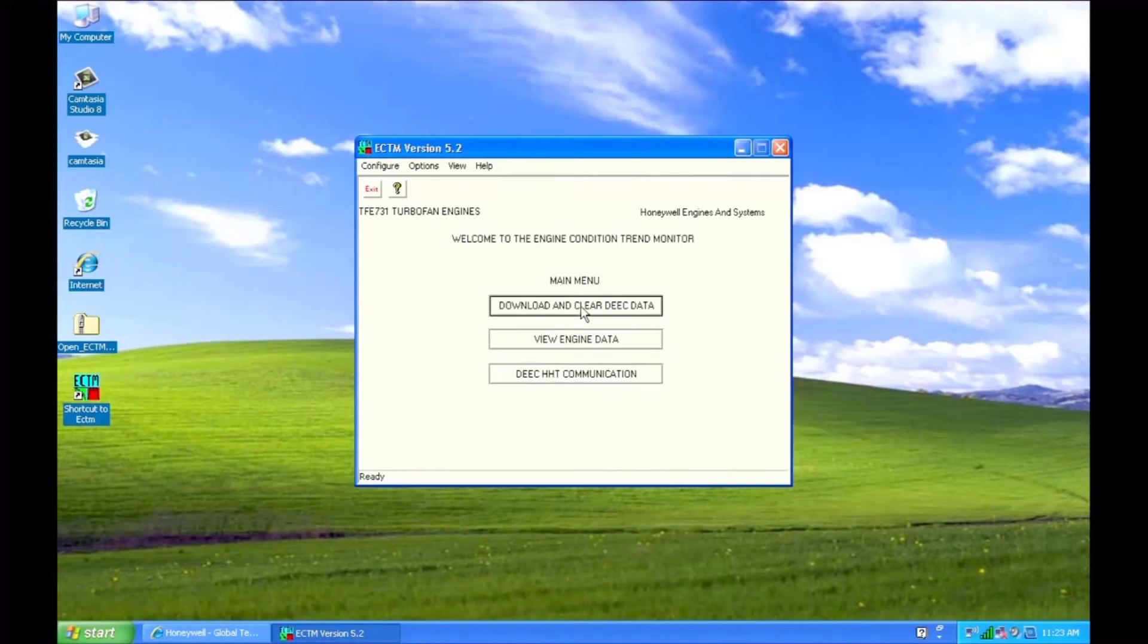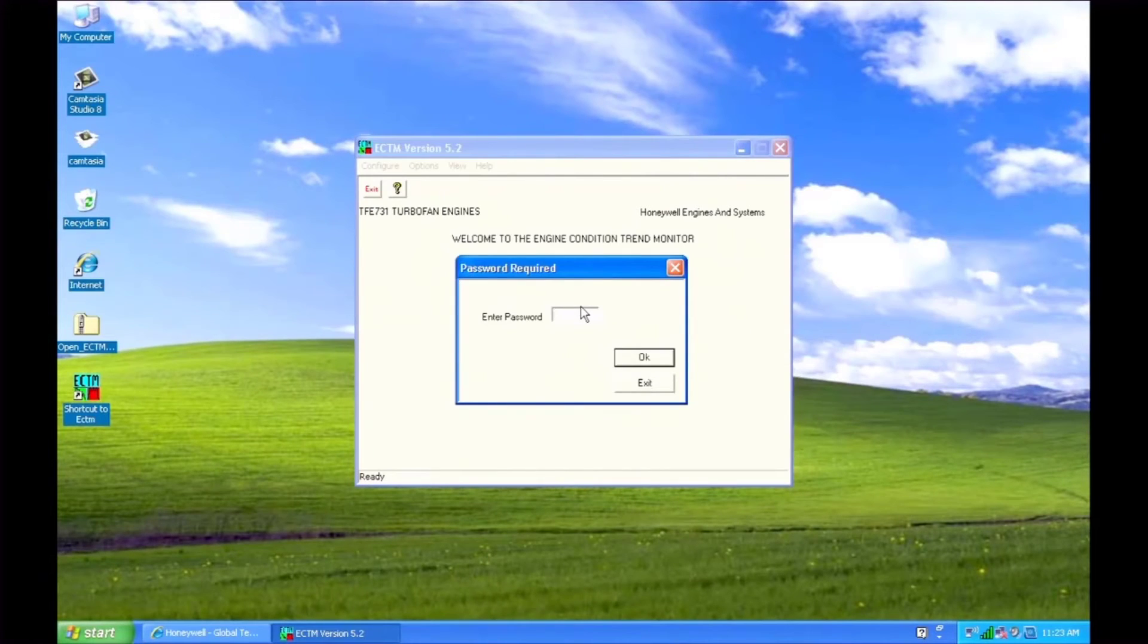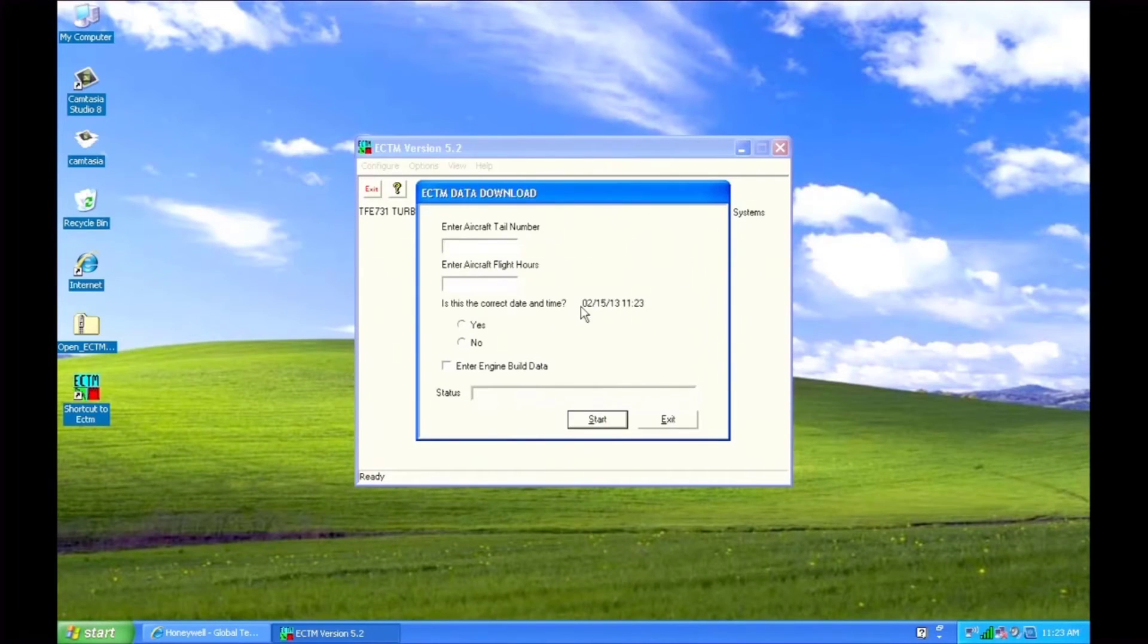Now we're ready for a download. Click on Download and Clear DEEC Data. The default password is Download. Enter the aircraft tail number and flight hours and verify the time and date.